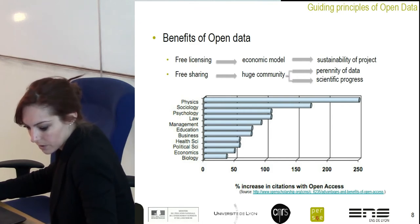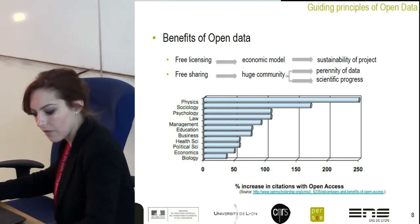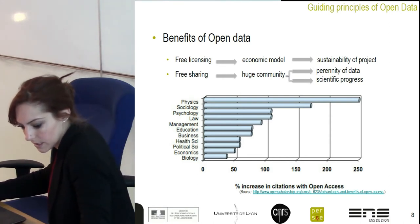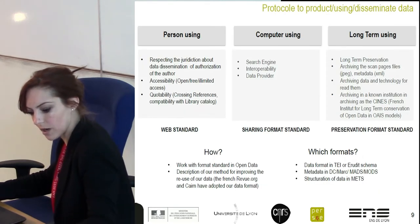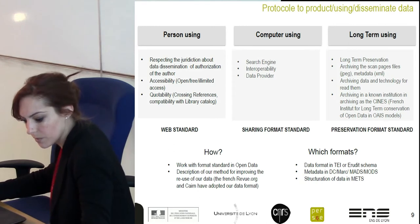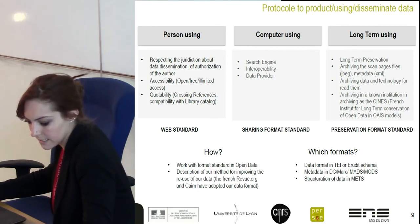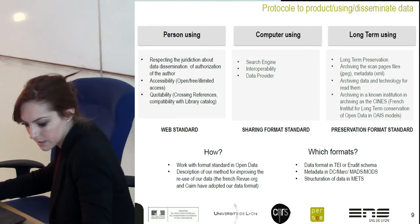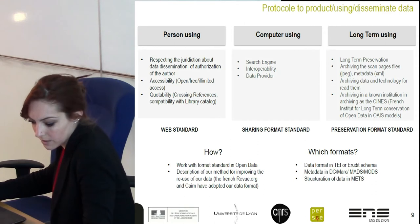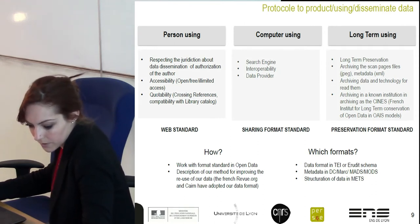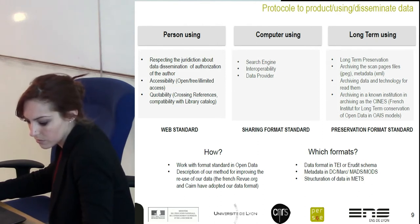Now we know the principles and benefits of open access sharing. Let's see what are the usages in terms of technical competencies and application. The researcher and the scientific institutions must set up an informational and technical infrastructure to assume open data diffusion. Most of the time, this economic investment is a problem for universities or laboratories. In this case, the researcher can make the choice to use an open access platform for disseminating their work, like the French HAL, or Academia.com or ResearchGate, etc.